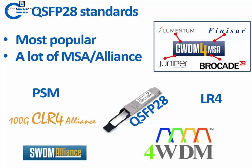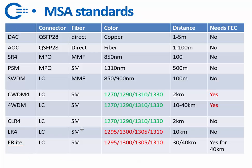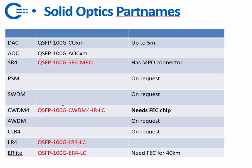So there are a lot of standards nowadays. The main difference between those alliances is that some of them need FEC and some don't, but I'll cover that later. Some of them have 1270 to 1330 nm wavelengths and some have narrow band — 1295 up to 1310 nm wavelength. The most popular standards we are using right now are the SR4 MPO, CWDM4 MSA format, LR4, and the ER — and we are offering these optics.